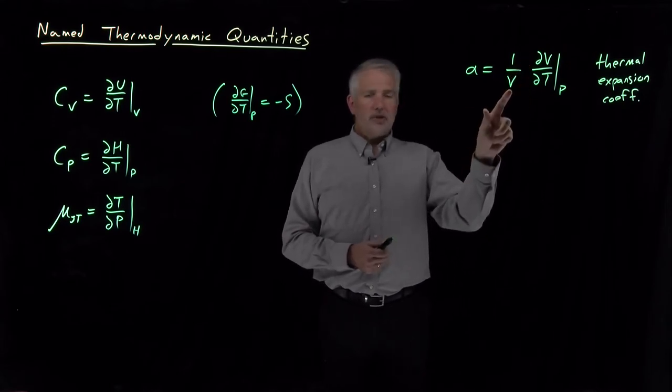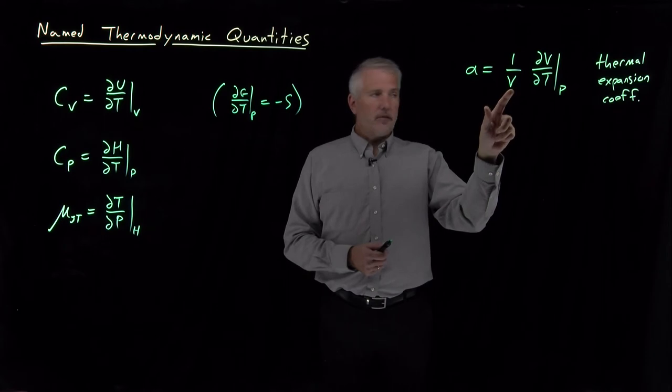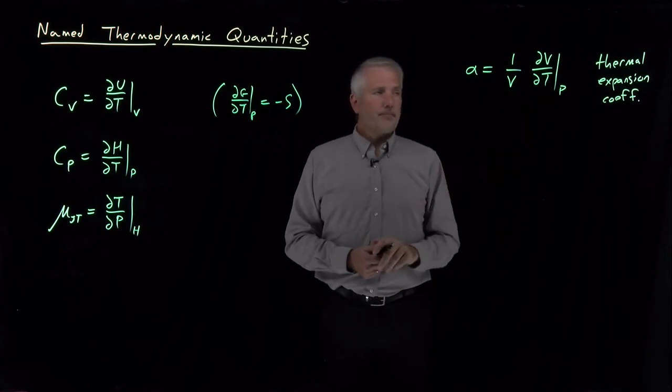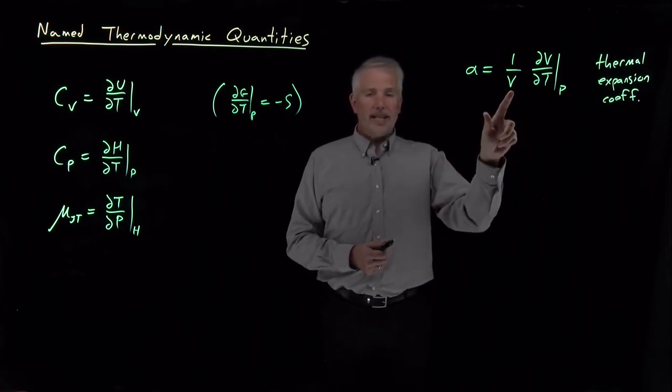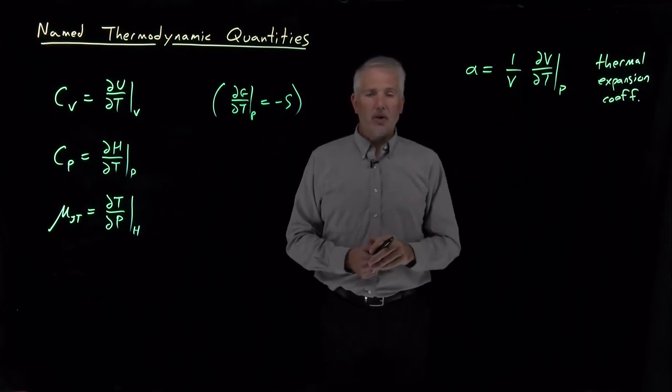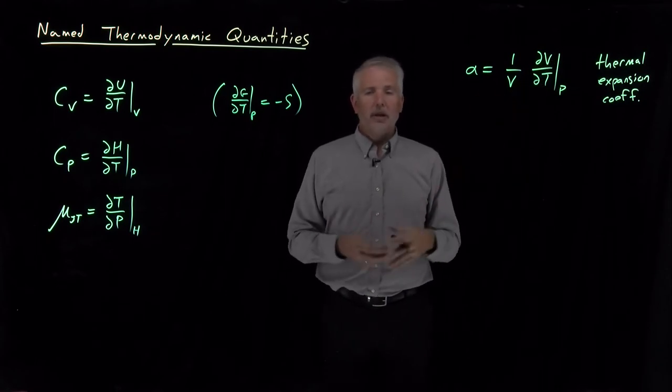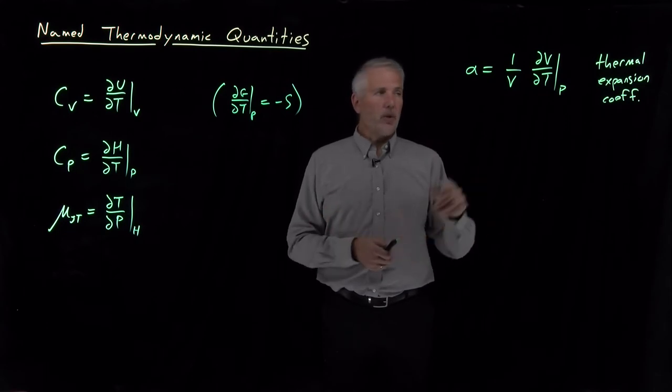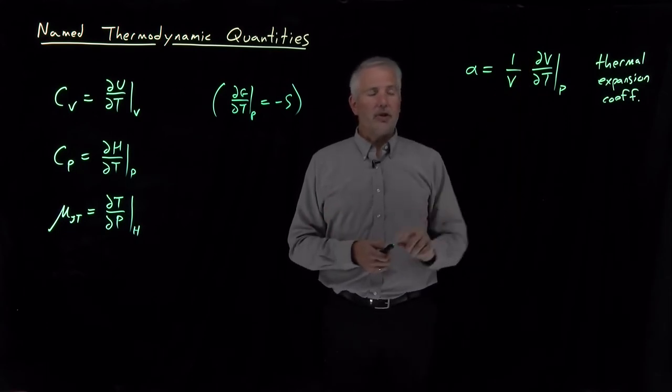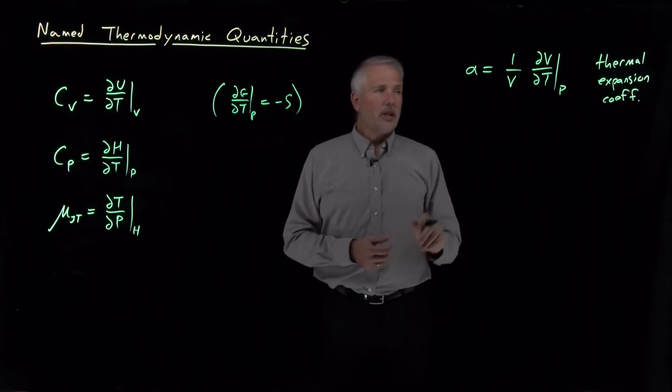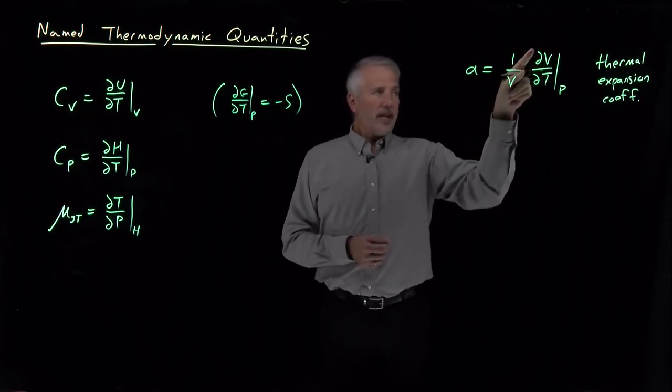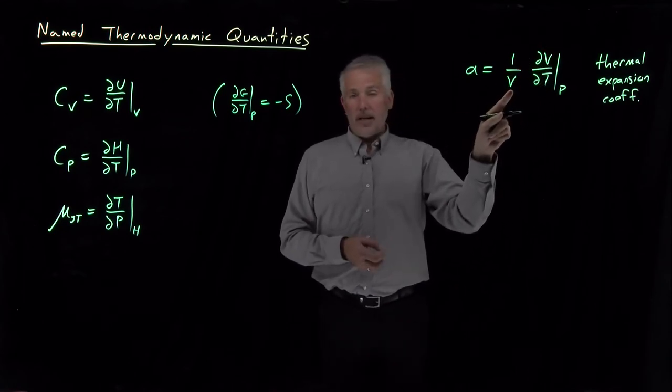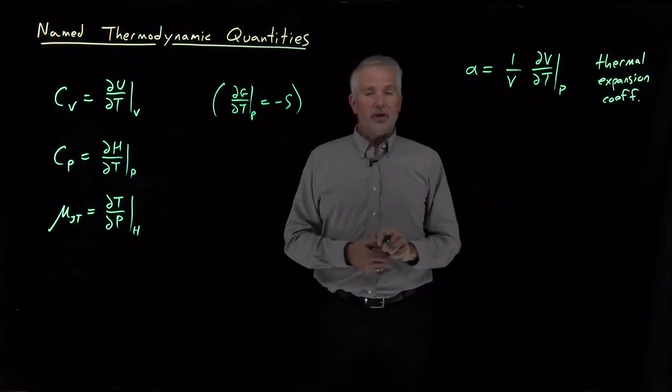The reason for this 1/V in front of the dV/dT at constant P is to keep this quantity intensive. Volume is an extensive property. I don't really care whether the volume of a one cubic meter object is going to increase by a few cubic centimeters. What I want to know is the fractional change in volume, the intensive change in volume. I divide this extensive volume by the volume, and that turns it into an intensive quantity.